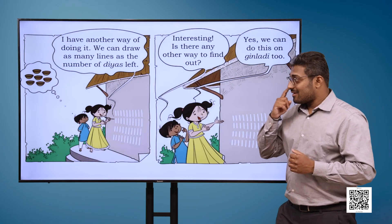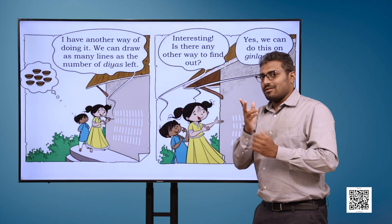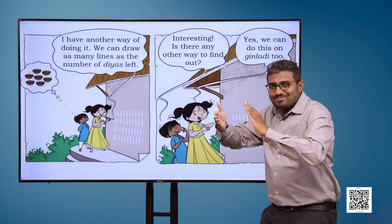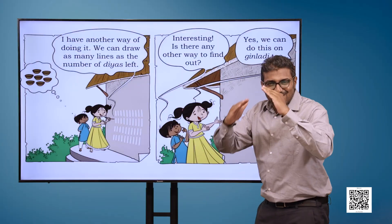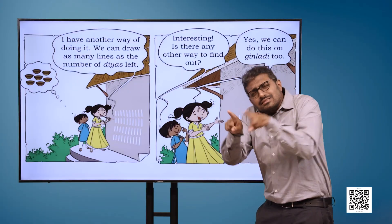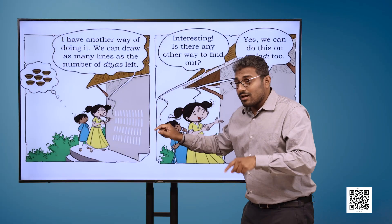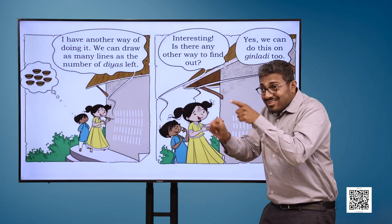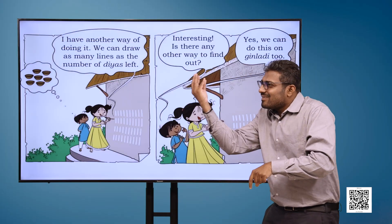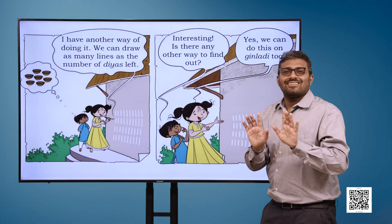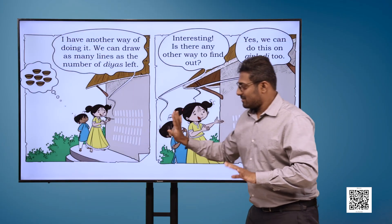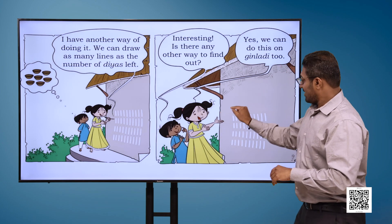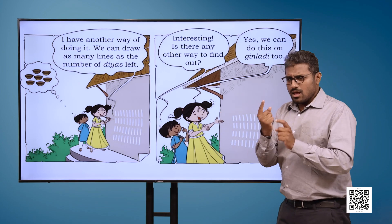Now we have two images on the page. In the image, the girl is trying to find the answer by drawing lines on the wall. I have another way of doing it. We can draw as many lines as the number of diyas left. Then the boy says, Interesting. Is there any other way to find out? The girl replies, Yes, we can do this on Ginlari too.